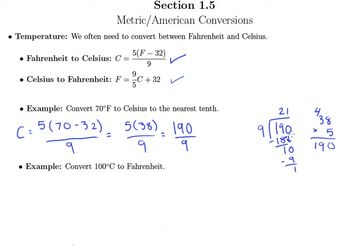Remainder of 1 — we need to keep going. It said round to the nearest tenth, so I'll add a decimal point and a 0, drop that 0 down, and add a decimal point in the quotient. 9 goes into 10 one time.